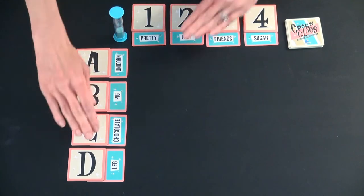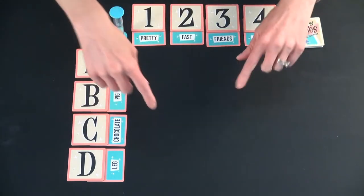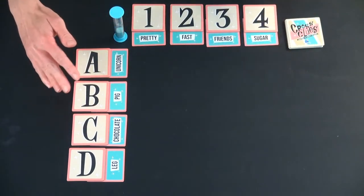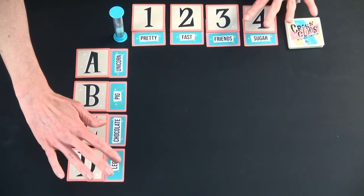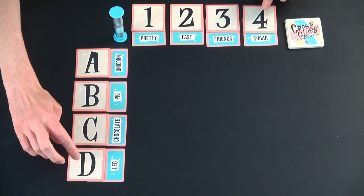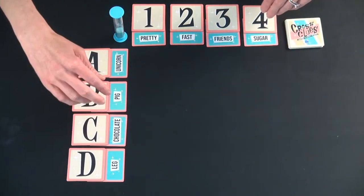For game setup, we have a classic game here, which is a four by four grid. You can do an express game with just a three by three grid, and then you need to take out any of the coordinate cards that have D or four on them.